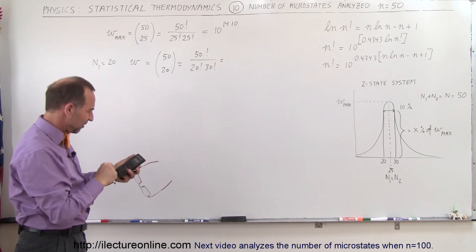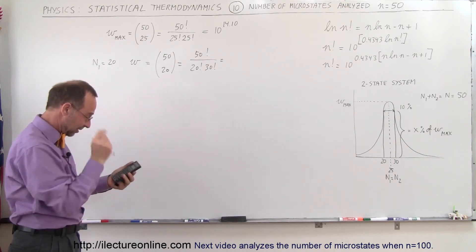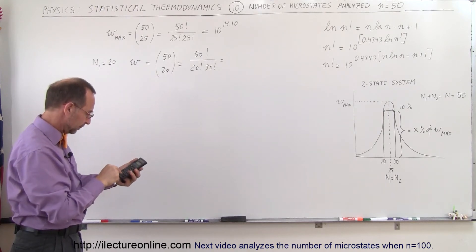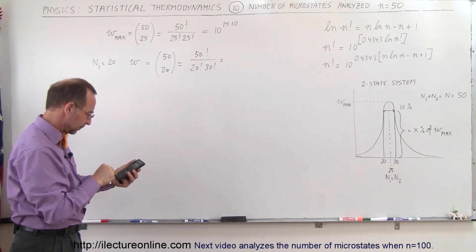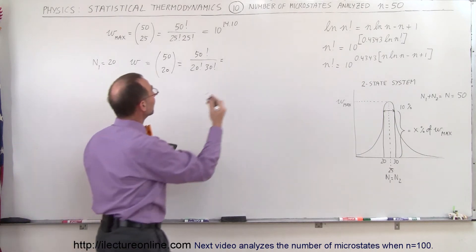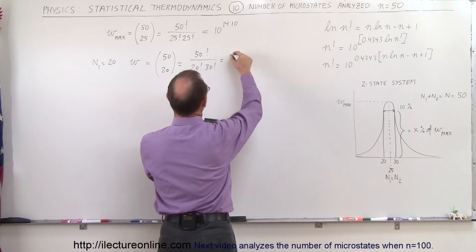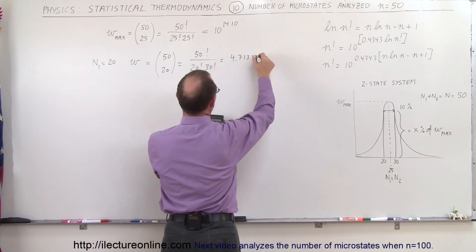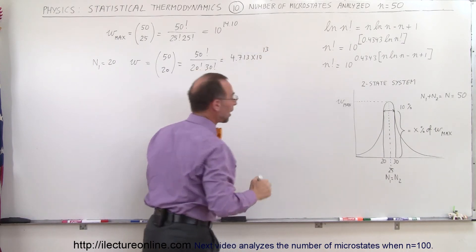So when I do that, 50 factorial divided by 20 factorial and divide by 30 factorial. All right, so that gives me, and let me show you what I get on my calculator. So it gives me 4.713 times 10 to the 13th power.